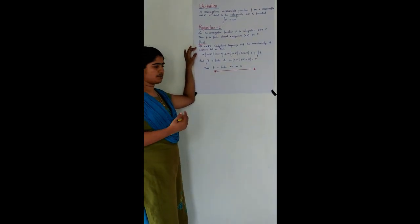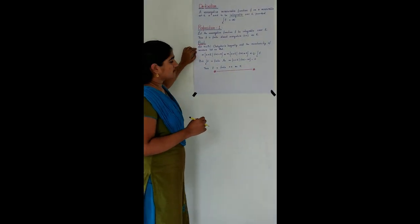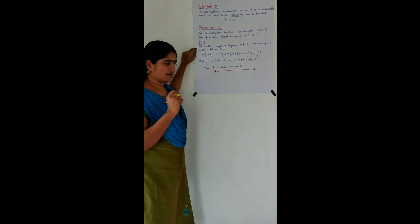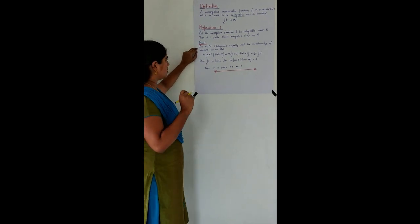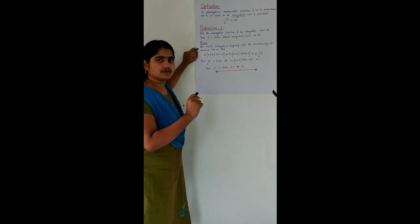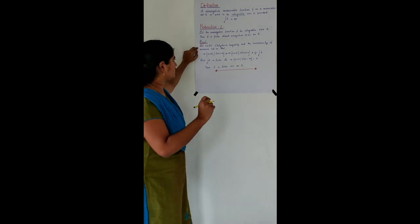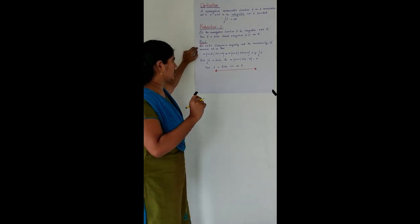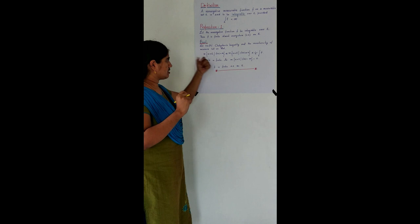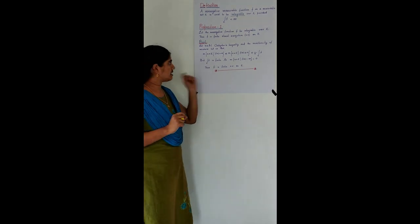Let us look into the proof. For each N in the natural numbers, we apply Chebyshev's inequality and monotonicity of measure. Let us see in detail.